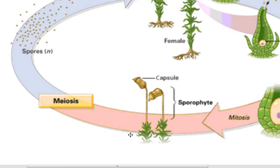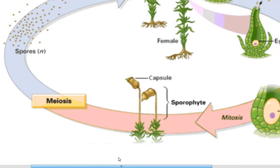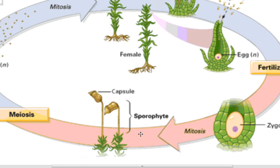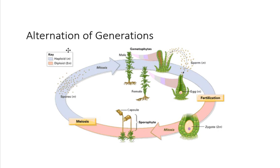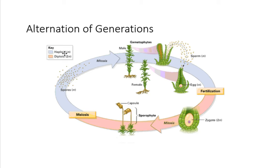Understanding the concepts of meiosis and fertilization, and the terms spores, zygote, gametophyte, and sporophyte, will go a long way to helping you understand this process. We're going to talk about four different life cycles, but if you don't understand those basic terms, this will all be difficult. These basic terms will be used in everything that we do, and we'll add some additional terms onto them as well.